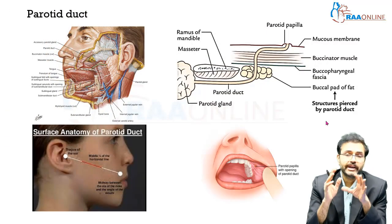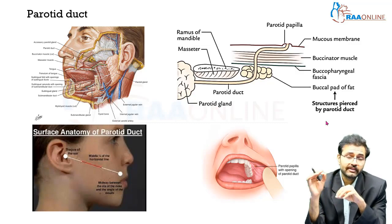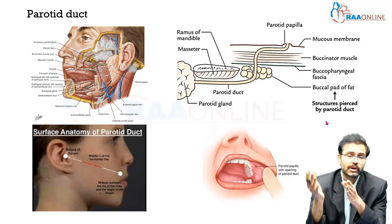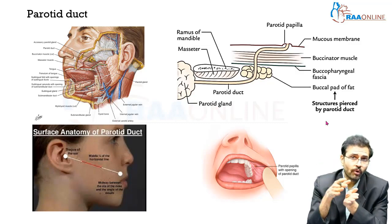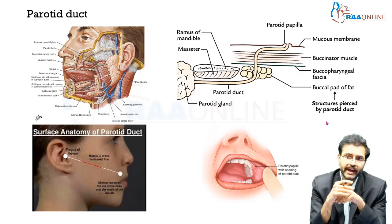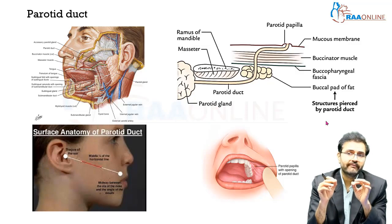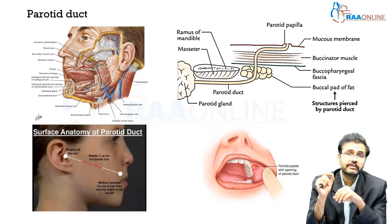Coming on to the parotid duct — it is the largest duct among the three major salivary glands. This duct is around three to five millimeters in diameter and starts from the anterior aspect of the parotid gland, draining into the oral cavity just opposite to the crown of the upper second molar tooth. During its course it goes over the masseter muscle, penetrates the buccinator muscle, buccopharyngeal fascia, and buccal pad of fat, then opens into the oral cavity via the parotid papilla.